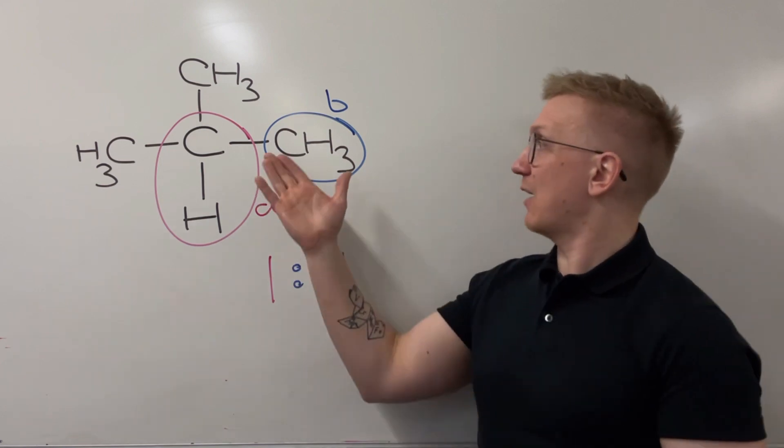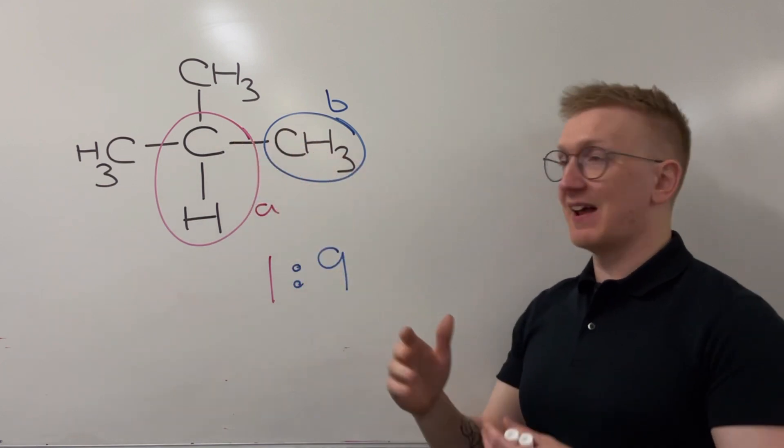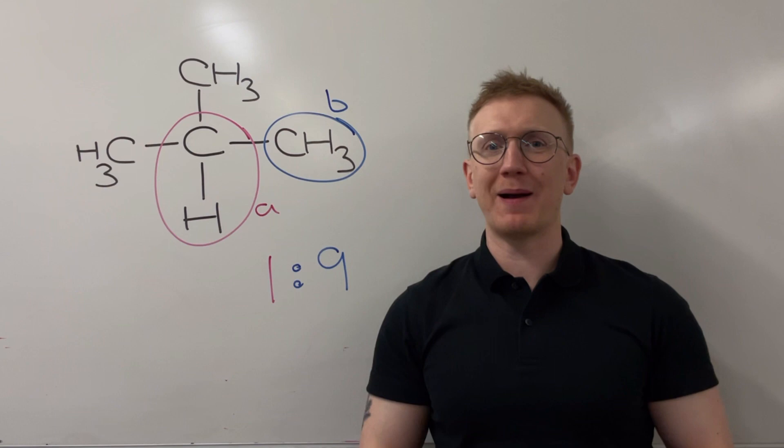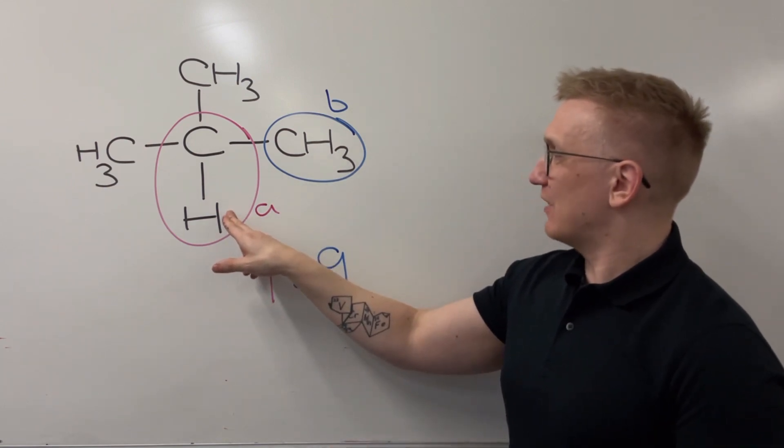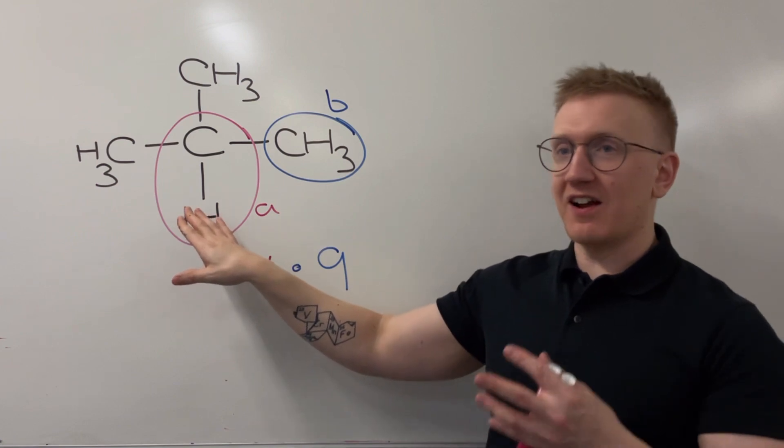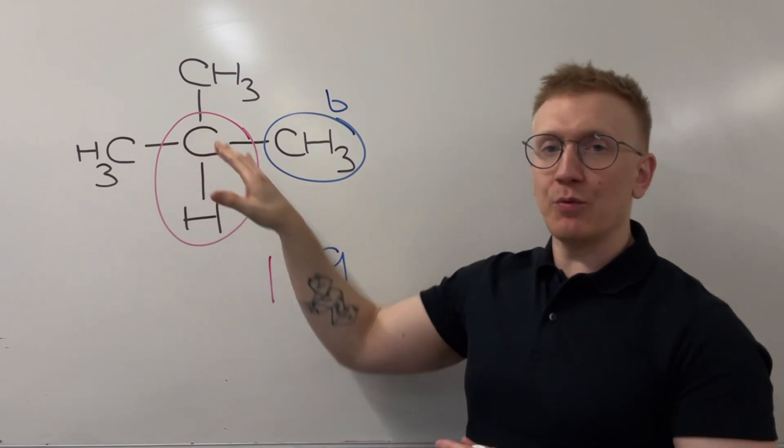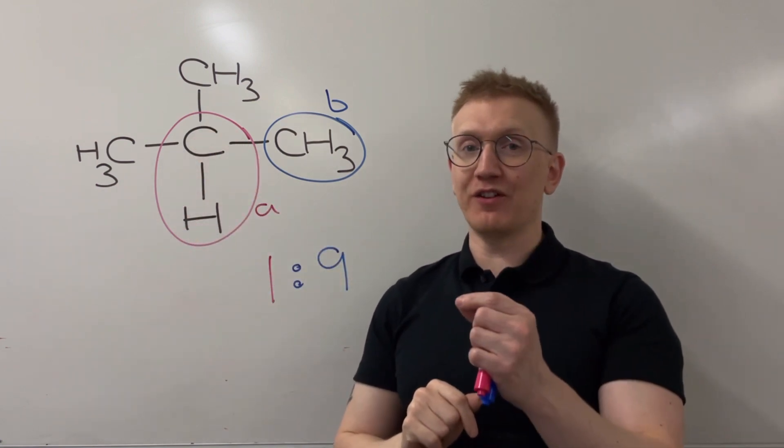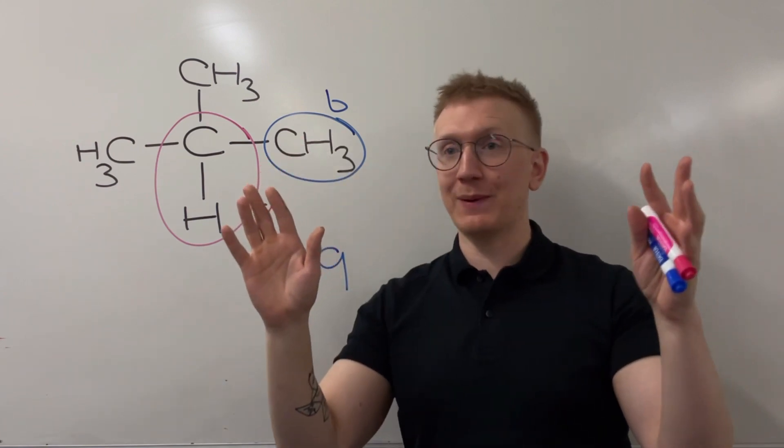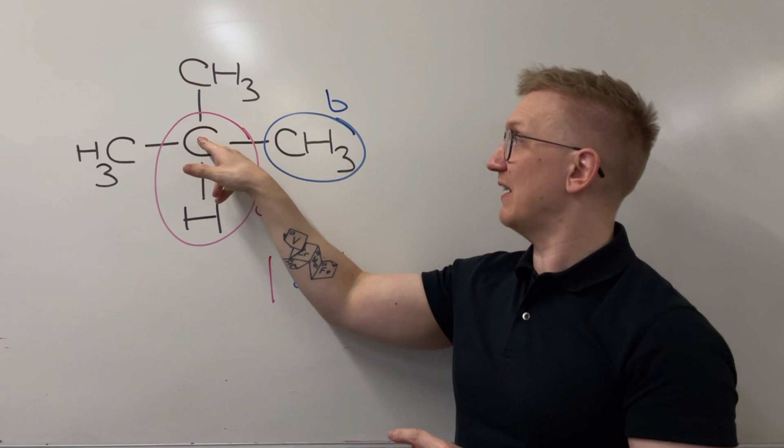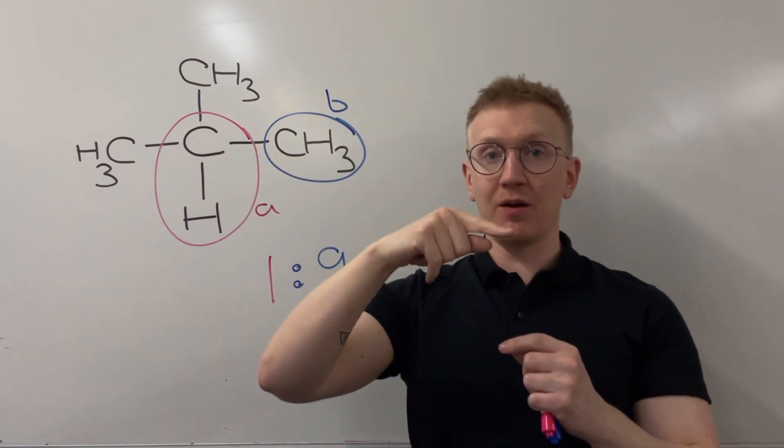So what else can we say? Now we've got the number of peaks I expect and now I know their ratio, let's talk about their splitting pattern. For this A peak just here, what we're going to do to decide its splitting pattern, we're going to count the number of neighboring hydrogens on the next carbons up. We need to go in as many directions as we can from this carbon, but we only go one carbon up in the line. We don't go any further than that.